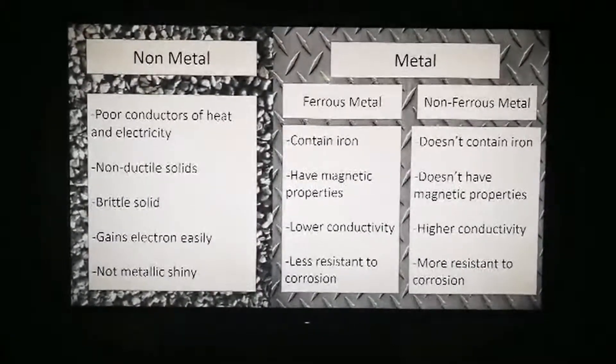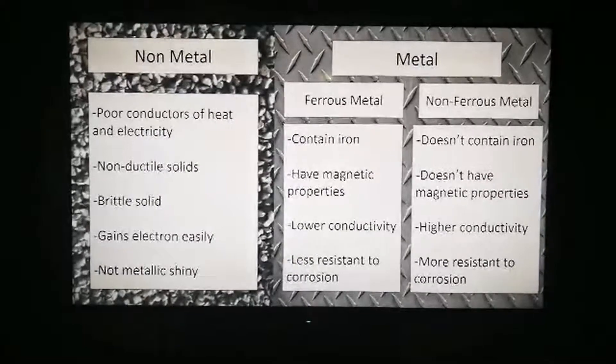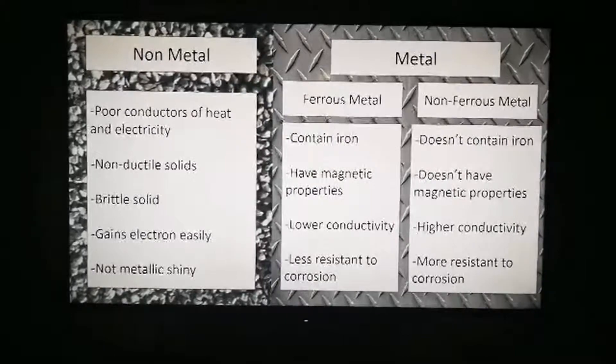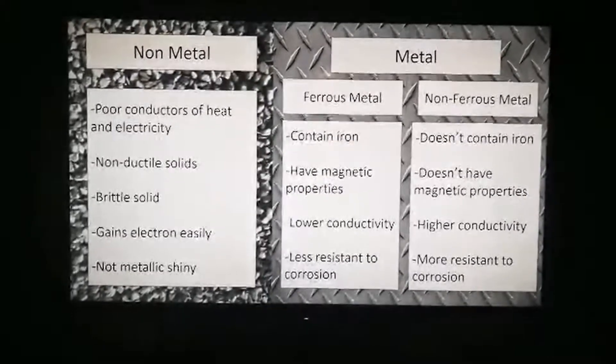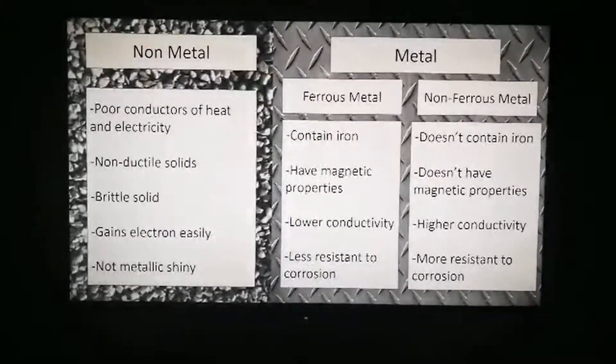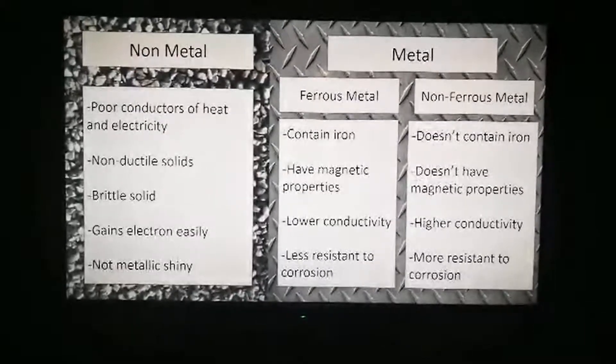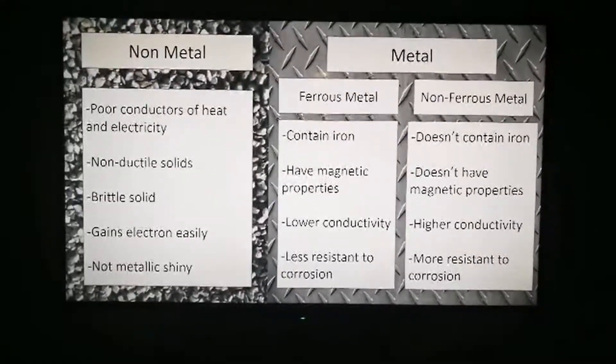For metal, a rough idea to differentiate between non-ferrous metal and ferrous metal is: non-ferrous metal does not contain iron, and ferrous metal contains iron. Therefore, non-ferrous metal has no magnetic property while ferrous metal has magnetic property.